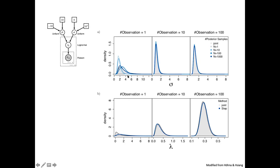When we only have a single data point per lambda, that's not very much information. If we take only one or ten posterior samples, we get a very poor match between the joint and the stepwise analysis. As we increase to a hundred or a thousand, it gets better, but even with a thousand posterior samples we're still not getting an exact match. However, if we increase the amount of data to ten or a hundred observations, we see a very good match between the joint and stepwise approaches, even when we only take a single posterior sample.